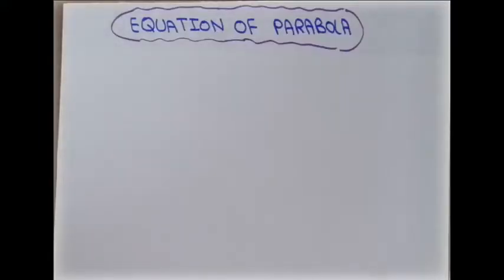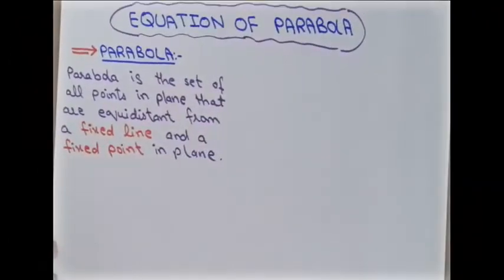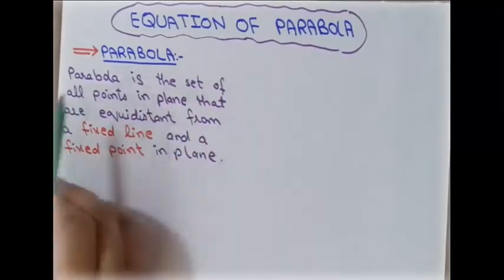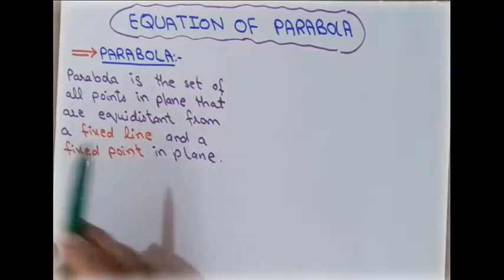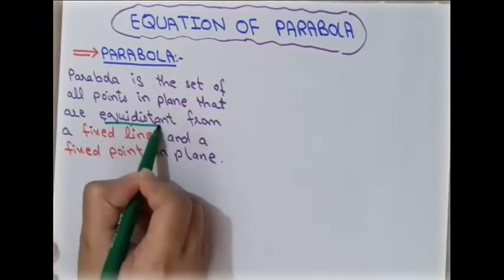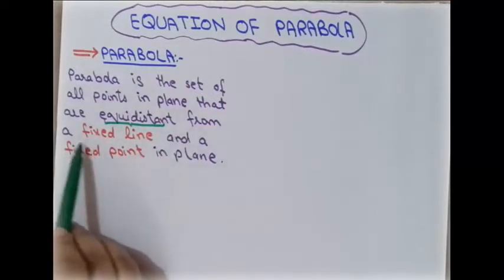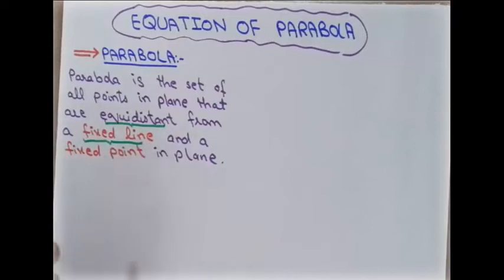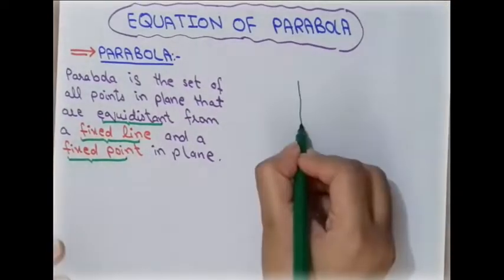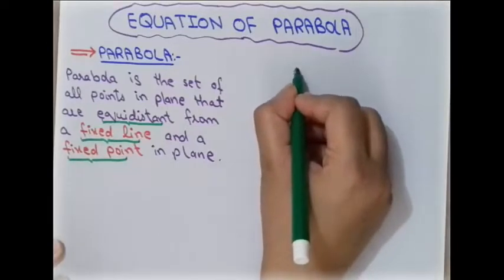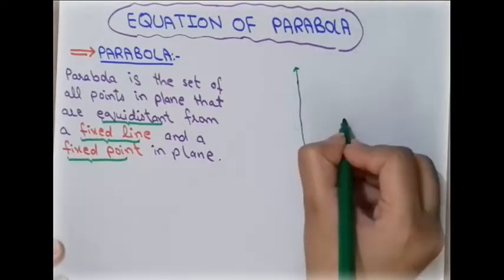In this lecture we will learn how to find the equation of a parabola. First, let's discuss the definition: a parabola is a set of all points in a plane that are equidistant from a fixed line and a fixed point. We will now sketch it — there is a fixed line and a fixed point.